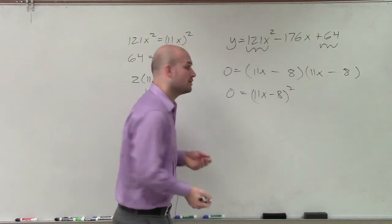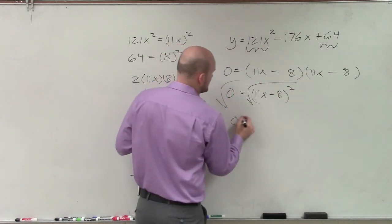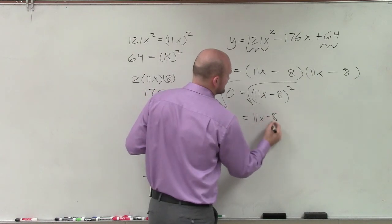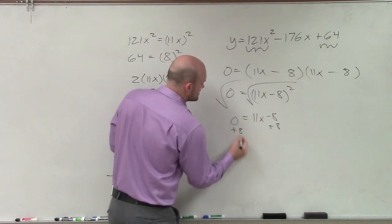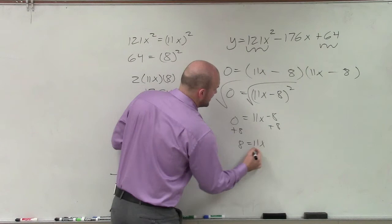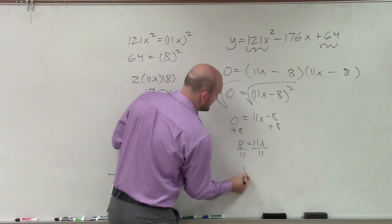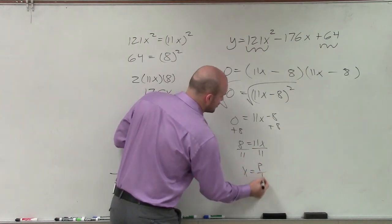Now I can use my square root method to solve. So I take the square root of both sides. 0 equals 11x minus 8. Add 8 to both sides. So I have 8 equals 11x. Divide by 11. x equals 8 over 11.